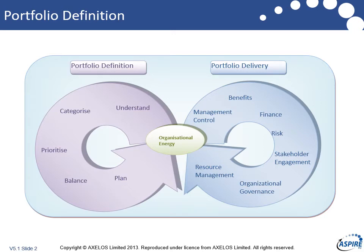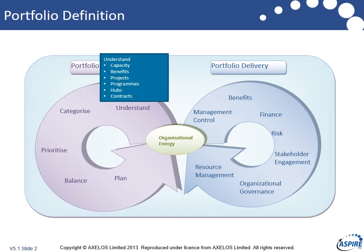In the definition cycle we have: understanding where we are in a portfolio, categorizing, prioritizing, balance, and plan. Against each one of those there are some things we should think about. When thinking about understanding, we've got to think about the capacity of the organization, understanding what's going on with benefits, what projects and programs are running and how well they're doing. Do we already have P3O hubs set up or commercial contracts to supply services to different parts of the organization?